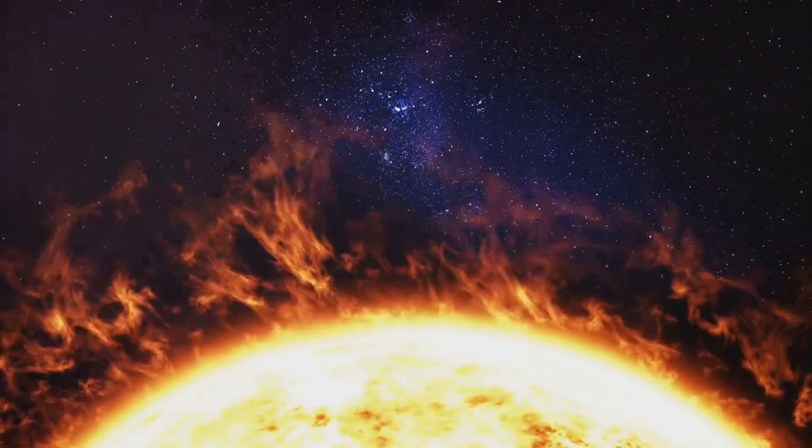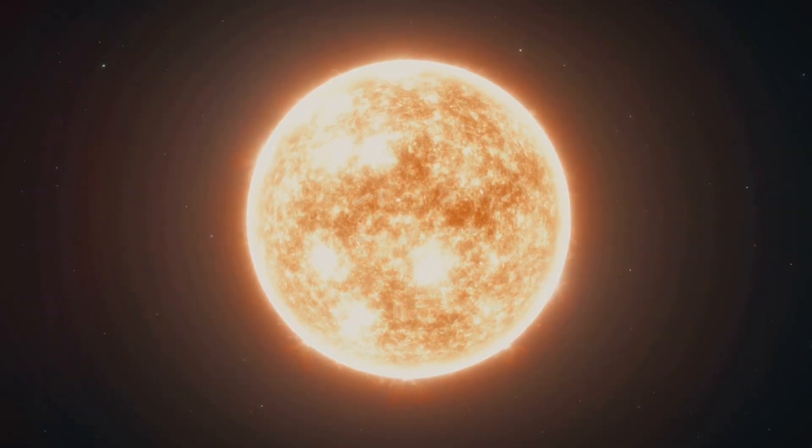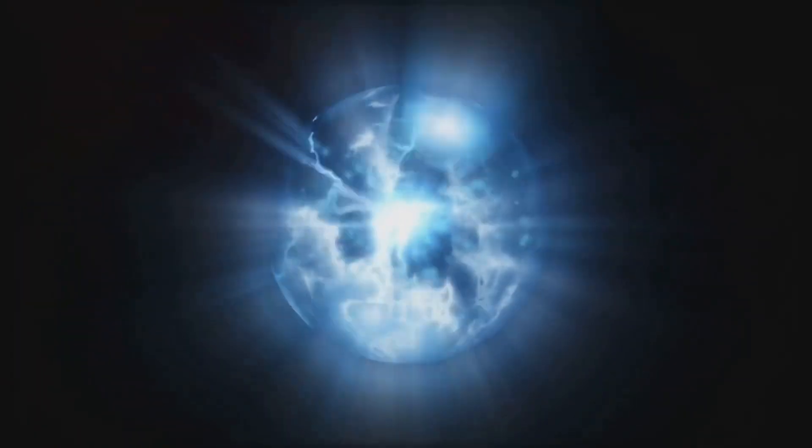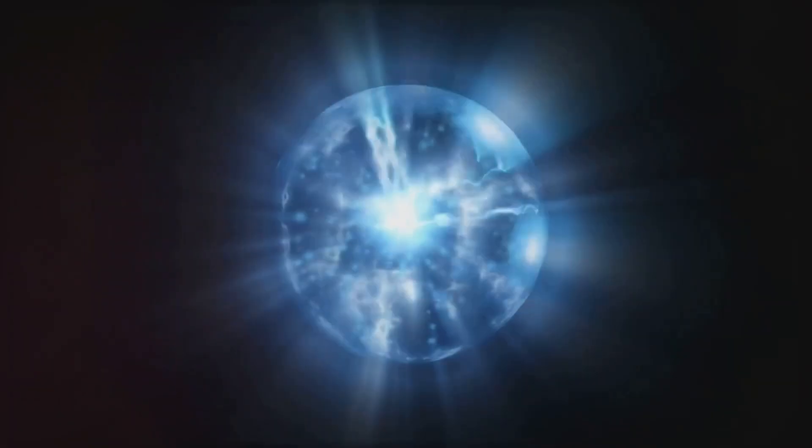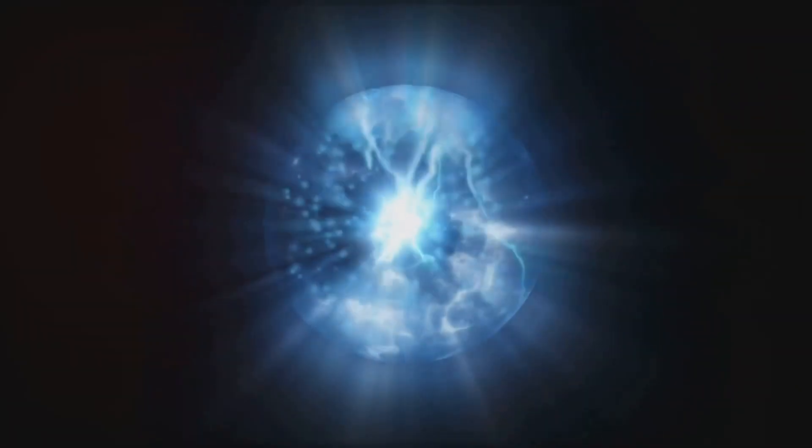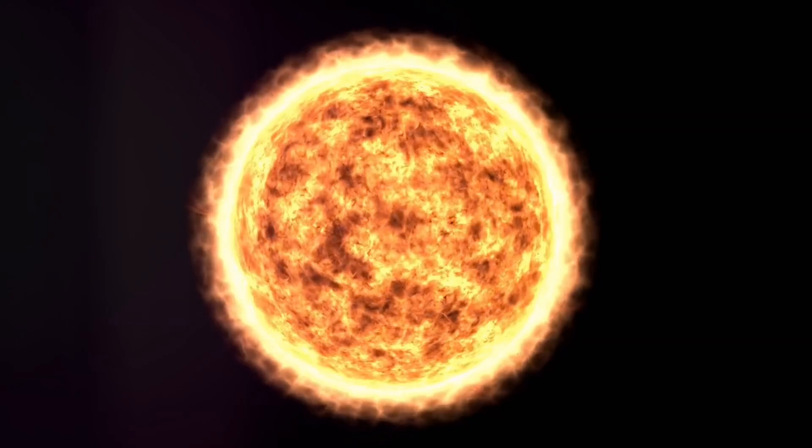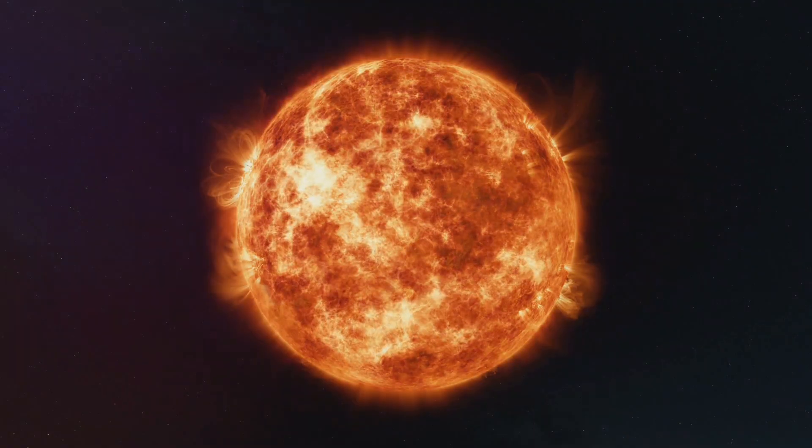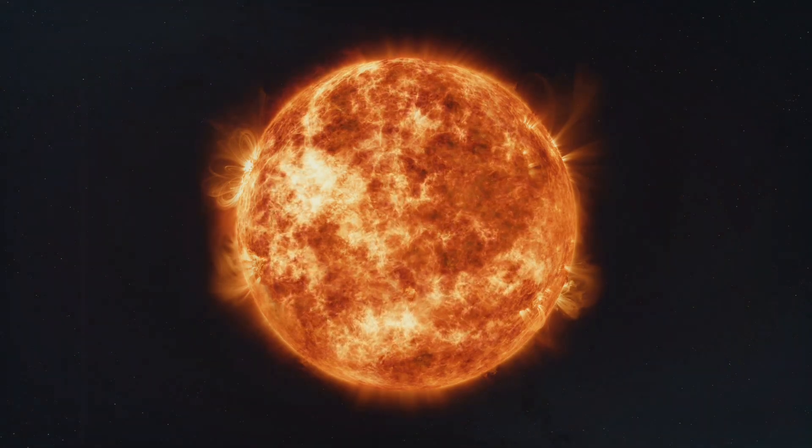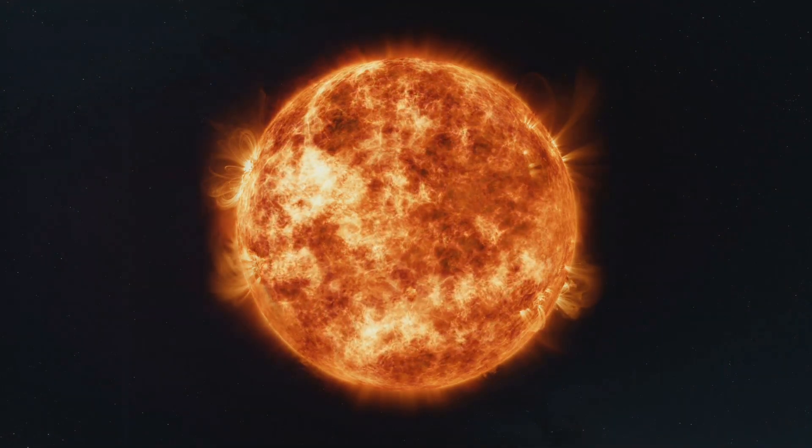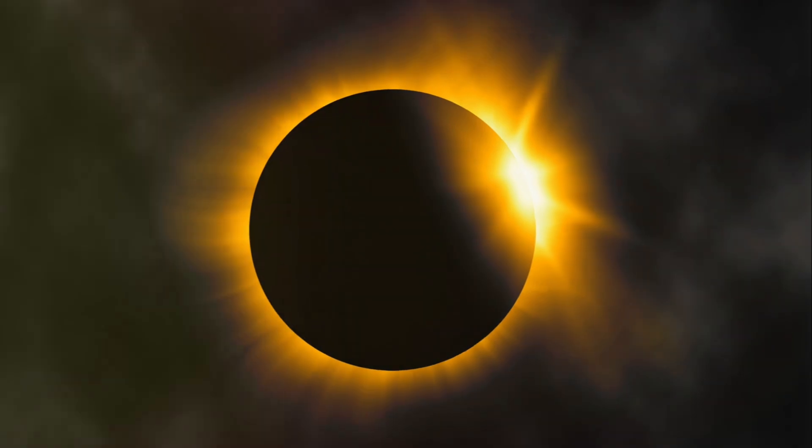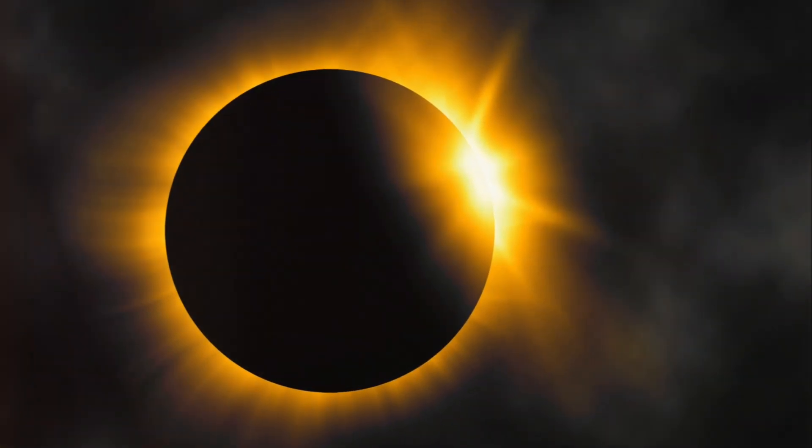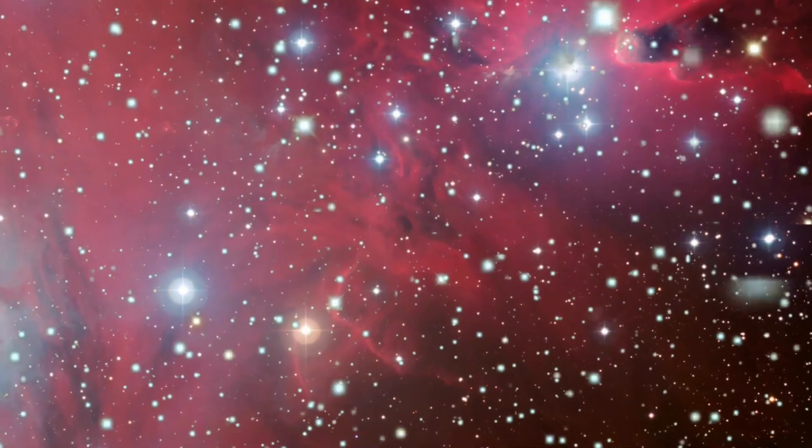Moving outward from the core, we enter the radiative and convective zones. The radiative zone is where energy produced by nuclear fusion in the core travels outward as photons, or particles of light. This zone is a sea of plasma where photons embark on a cosmic game of pinball, bouncing around for thousands of years before they finally escape into the convective zone. The convective zone is where hot plasma rises towards the sun's surface, cools down, and then sinks back down to heat up again, creating a continuous cycle of convection currents. This zone is responsible for the sun's granulated appearance, with each granule representing the top of a convection cell.